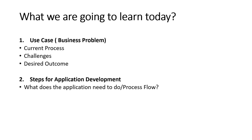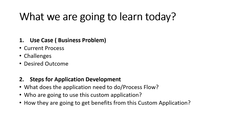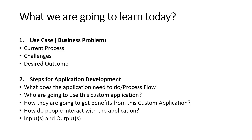After understanding the business problem, we'll cover the steps for application development: what the application needs to do, who is going to use it, how they will benefit, how people interact with the application, and finally the inputs and outputs. As a developer it's very important to have a clear picture of the desired outcome before you start development.